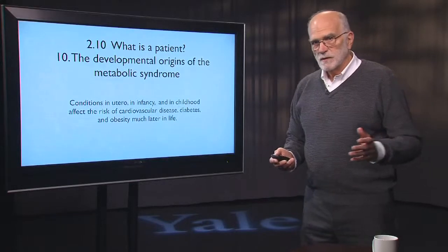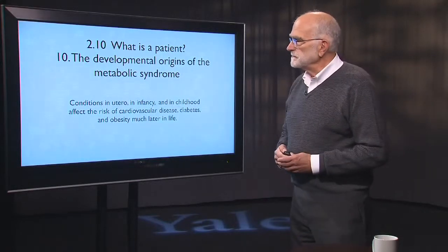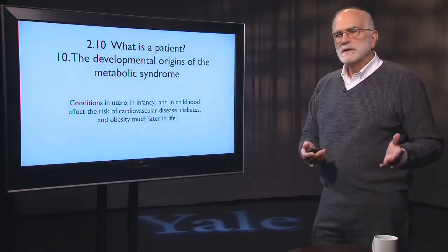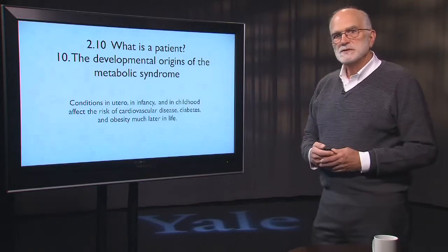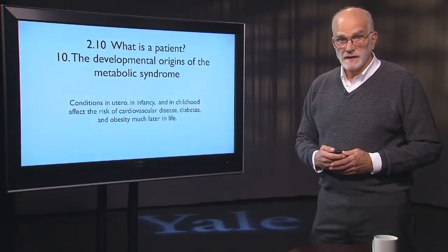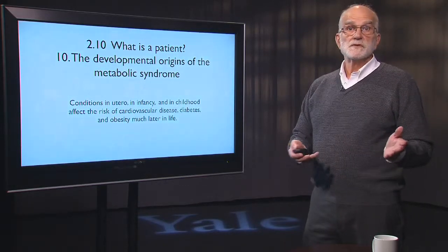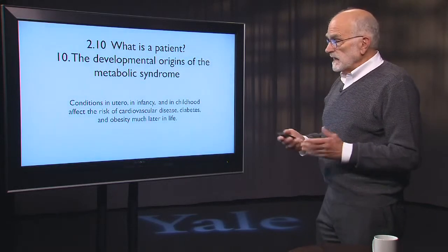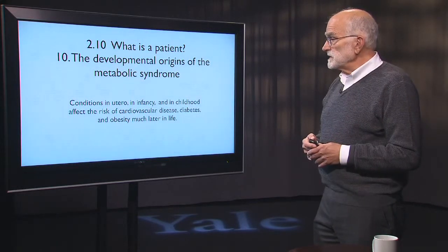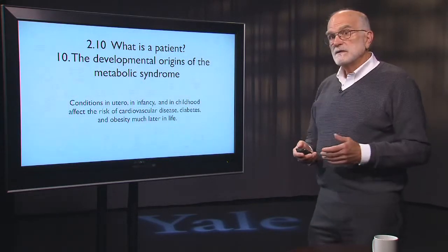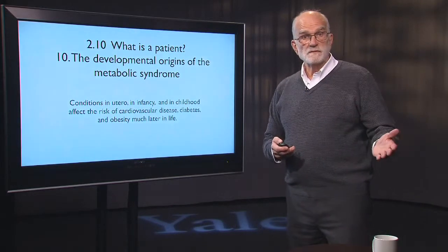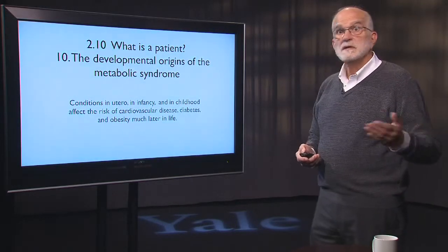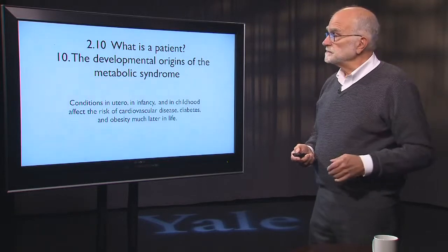Let's take another look at what is a patient. Patients are organisms that encounter conditions early in life that make a big difference to things that happen to them later in life. That happens in utero, it happens in infancy, and it can affect the risk of heart disease, of diabetes, and of obesity 50, 60 years later.